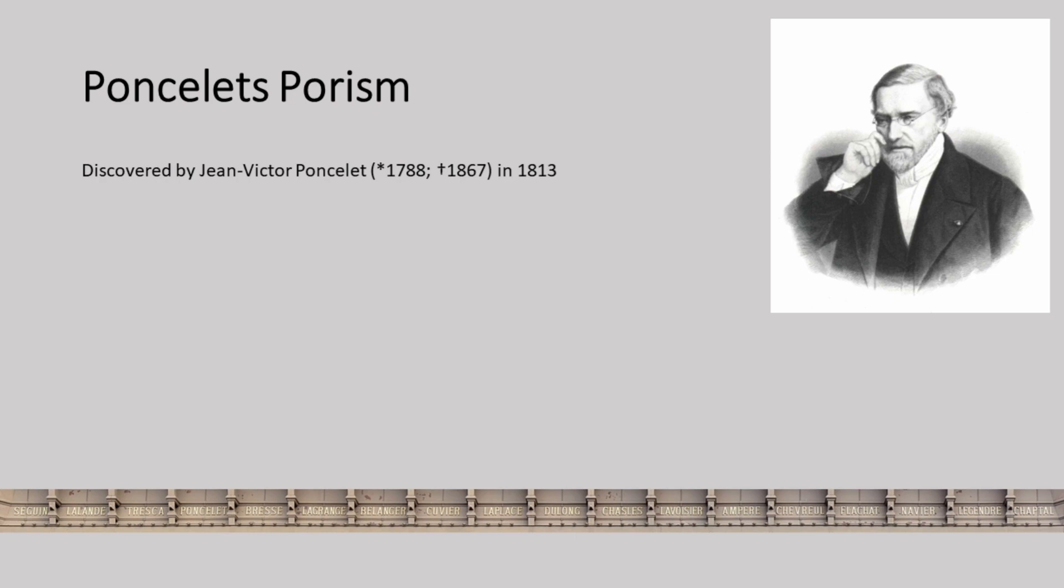Jean-Victor Poncelet lived from 1788 to 1867 and discovered Poncelet's Porism in 1813. Poncelet was a French mathematician and his name is inscribed as one of 72 on the Eiffel Tower in Paris.